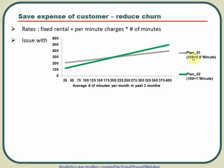Plan 01 has a higher fixed cost but a lower per-minute slope, whereas Plan 02 has a lower fixed cost but a higher slope. A rare user on Plan 01 is incurring huge cost. Similarly, a frequent caller on Plan 02 is also incurring high cost. If the frequent caller shifts to Plan 01, they will save money because the lower per-minute rate benefits heavy users.